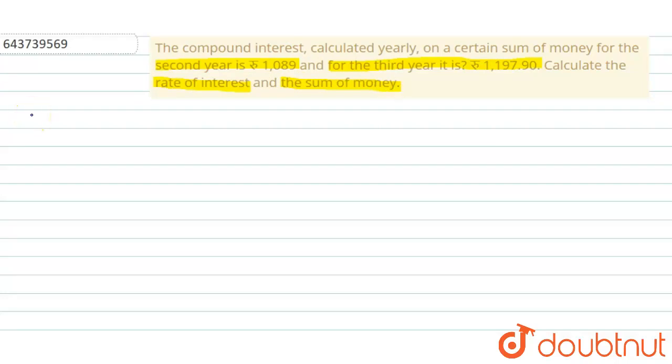Now we will pen down what is given to us for finding the solutions. Given: CI after second year is equal to rupees 1089. CI after third year is equal to rupees 1197.90.